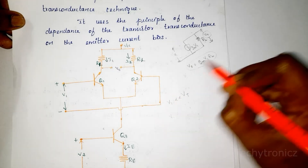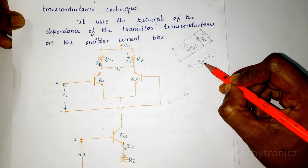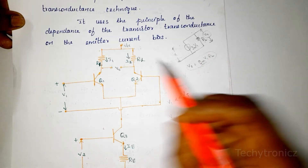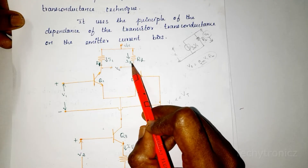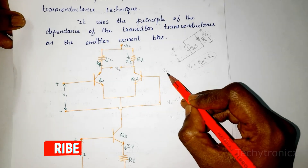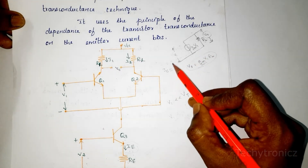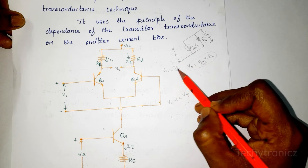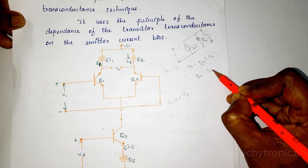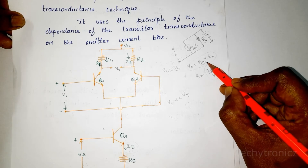The output voltage V0 is equal to gm times V1 times RL. Here gm is the transconductance — the ratio of output current to input voltage. The output current is the collector current IC, which is approximately equal to the emitter current IE. So gm equals IE divided by Vt. This is the transconductance value.